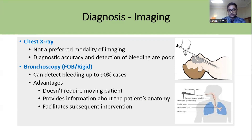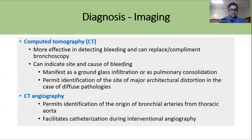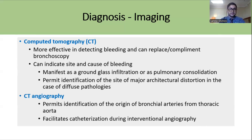CT scan can replace or complement bronchoscopy. Some studies have shown a higher diagnostic yield with CT scan compared to bronchoscopy, but both can be used for diagnosis. CT scan can indicate the site and cause of bleeding, showing manifestations like ground-glass infiltration or pulmonary consolidation, and helps identify the underlying disease. CT angiography helps identify the origin of the bronchial arteries from the thoracic aorta and facilitates catheterization during interventional angiography and arterial embolization.